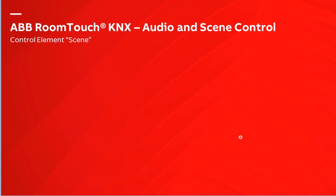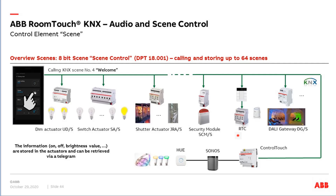Now let's come to the next topic: scenes. With the scene function we can call or store a scene — the typical 8-bit scene according to KNX data point type 18.001. With one telegram we can call or store up to 64 scenes. The big advantage is we send only one KNX telegram, and depending on the value we call or store up to 64 different scenes. The information — on/off, brightness value, lamella position, angle, HVAC setpoint — is all stored in the actuator. We send only the command, and the device retrieves the stored values.